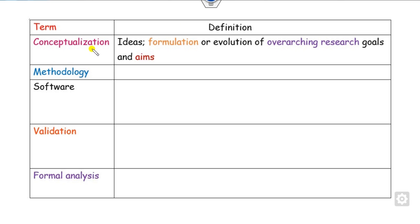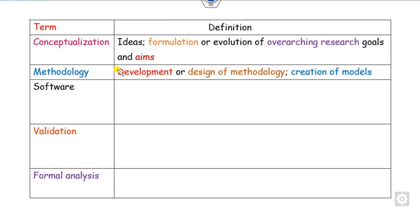Conceptualization: if the author put up the main idea, formulated the research goals, or formulated the aim of the research problem, then against their name you write 'conceptualization.' This word is used for whoever put up the idea or formulation of the paper. Methodology: this is used against the author's name who designed or created the model. Whoever created or designed the model in your research paper, you list them under methodology. Software: whoever used MATLAB, Python, or other programming to test components or design computer programs — basically anyone implementing outputs using programming — you list under software.